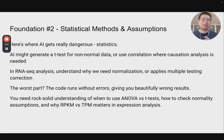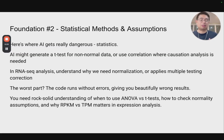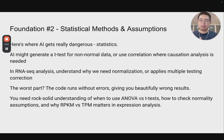You really need a solid understanding of statistics — check normality assumptions, and understand why, for example, RPKM versus TPM matters in RNA-seq expression analysis. TPM stands for transcripts per million; RPKM stands for reads per kilobase per million. I also have another blog post for that.